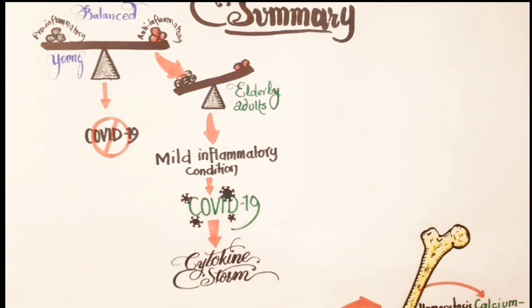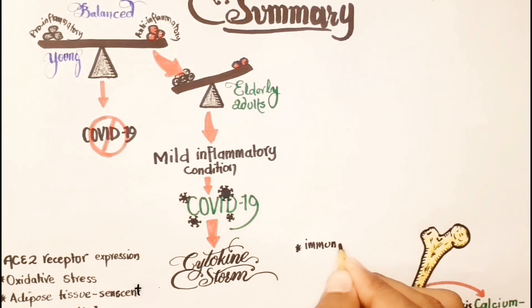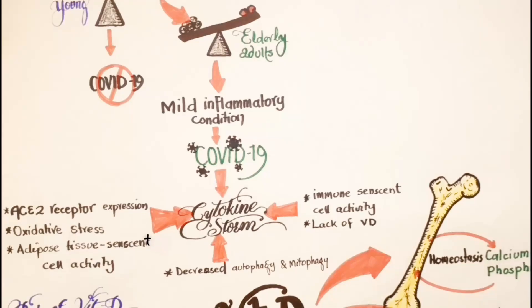Alteration of ACE2 receptor expression, oxidative stress, adipose tissue senescent cell activity, immune senescent cell activity, lack of vitamin D content, as well as decreased autophagy and mitophagy may contribute to the high amplitude of immune response to external challenges in elderly adults.